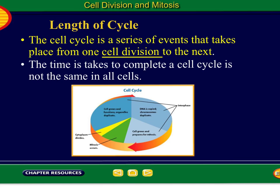Sometimes the checkpoints don't work, and the cell keeps going and going and going when it shouldn't. That's what happens with cancer — the checkpoint isn't quite working, and it just keeps going and reproducing out of control.